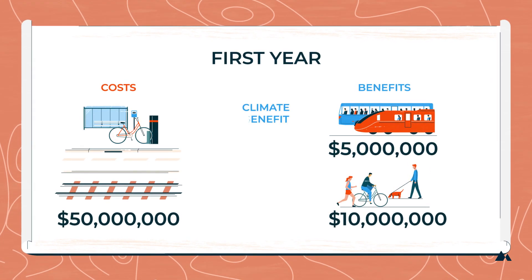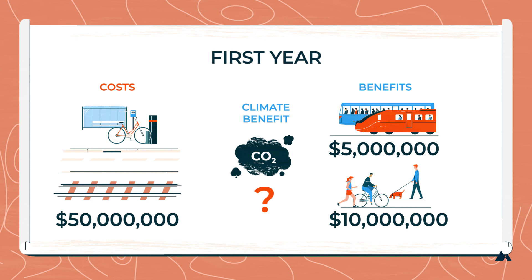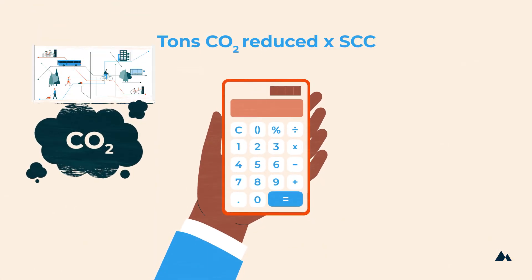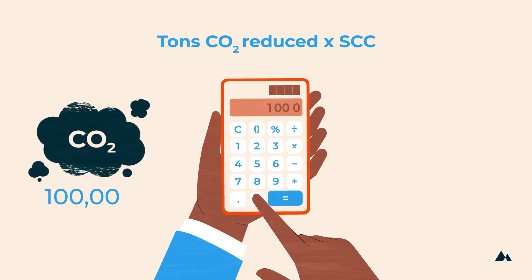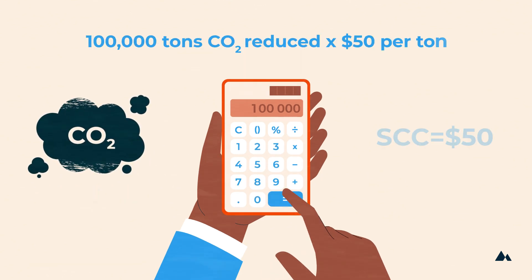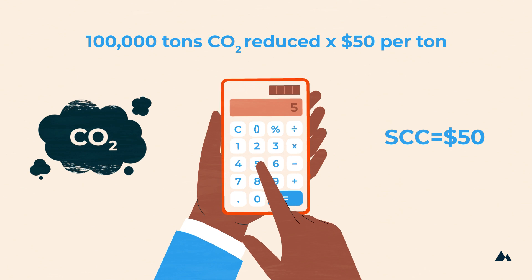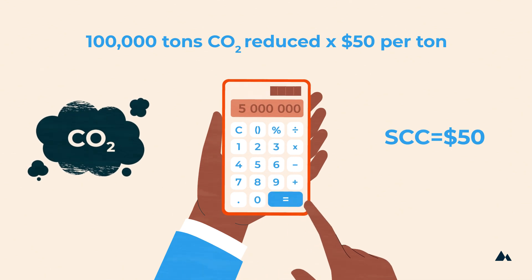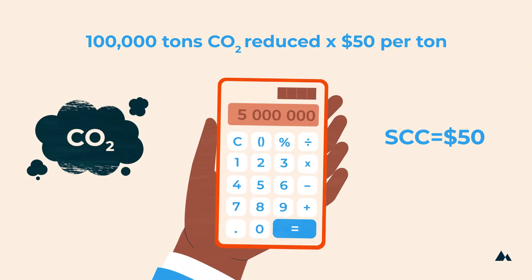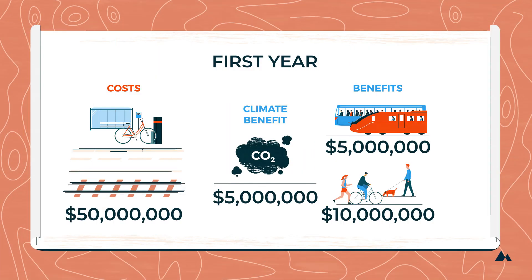In order to calculate the policy's climate benefits in a given year, we need to multiply the reduction in CO2 emissions by the social cost of carbon. This policy will reduce carbon dioxide emissions by an estimated 100,000 metric tons of CO2 per year. If, for example, the social cost of carbon is estimated as $50 per metric ton, then the benefits from avoided climate damages would equal $5 million in the first year.